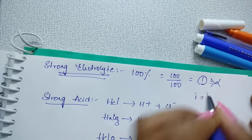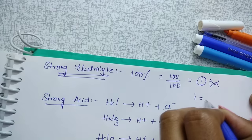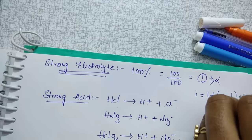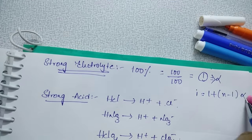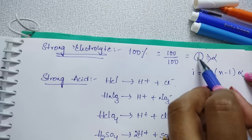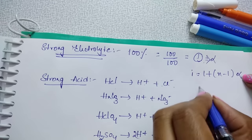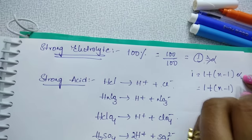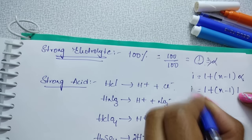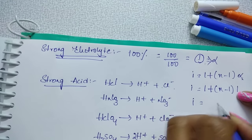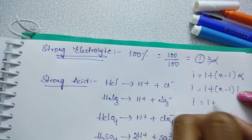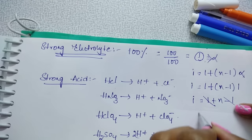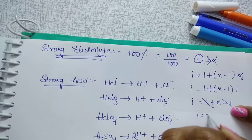Using the relation I = 1 + (N − 1)×alpha, substituting alpha = 1: I = 1 + (N − 1)×1 = 1 + N − 1 = N. So for strong electrolytes, the Van't Hoff factor I equals N, the number of ions.